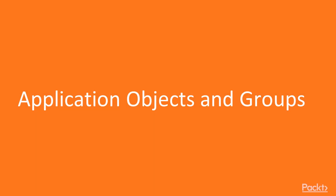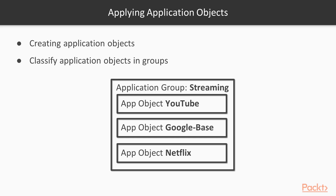Application objects and groups. As we continue our journey into Palo Alto's PanOS 8 interface, we're going to start looking at one of the next generation firewall features — the fact that you can classify network traffic inbound or outbound from your firewall based on applications.